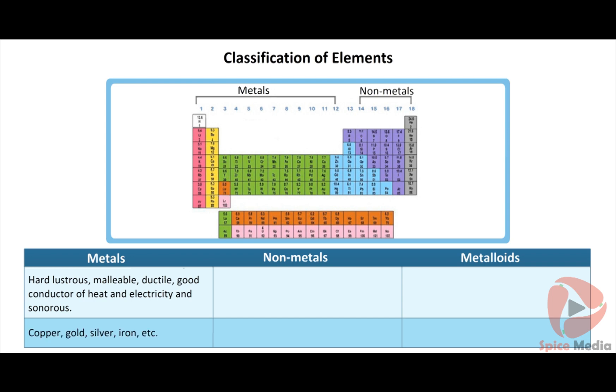Non-metals: Only about 16-17 elements are soft, non-lustrous, non-malleable, non-ductile, bad conductors of heat and electricity, and non-sonorous. Examples: hydrogen, oxygen, sulfur, carbon, etc.